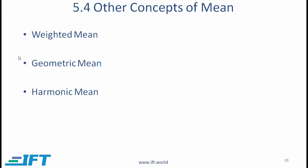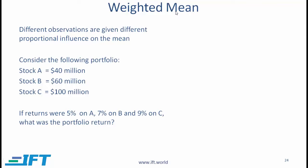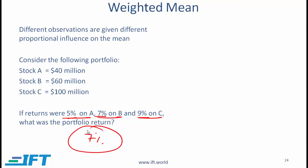Let's talk about the weighted mean. In a weighted mean, different observations are given different proportional influence on the mean. Consider this situation: you have invested in three stocks with different amounts. Over the year the returns were 5% on A, 7% on B, and 9% on C. If you simply take the mean of 5, 7, and 9 you get 7%, but that is not a true reflection of portfolio performance because a higher weightage is in stock C.